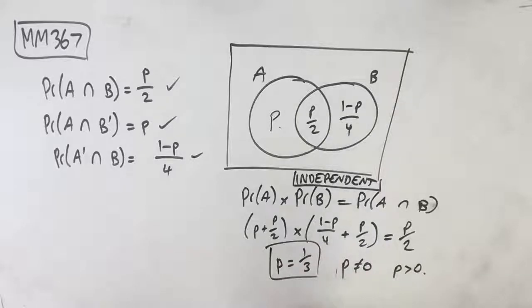So P is 1 over 3, which means our answer is B. B is our final answer for MM367, guys.